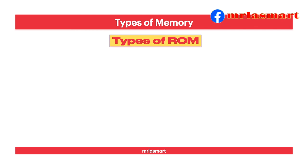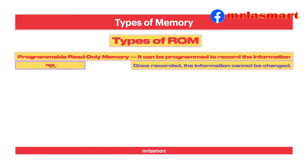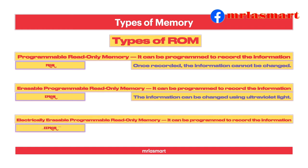Types of ROMs. Programmable read-only memory (PROM): it can be programmed to record information, but once recorded, the information cannot be changed. Erasable programmable read-only memory (EPROM): it can be programmed to record information, and the information can be changed using ultraviolet light. Electrically erasable programmable read-only memory (EEPROM): it can be programmed to record information, and the information can be changed using electrical signals.